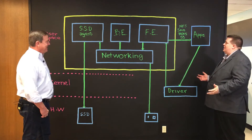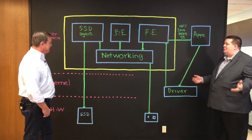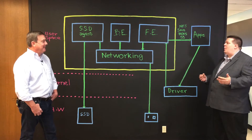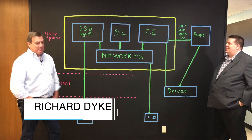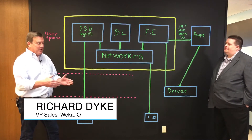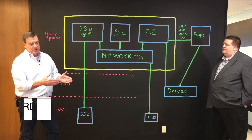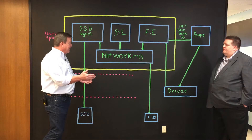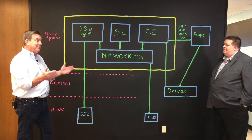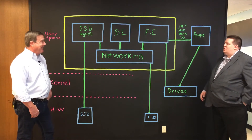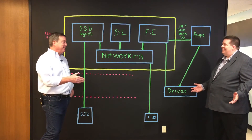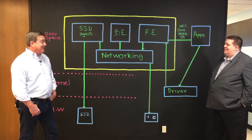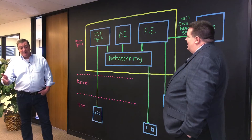We have an interesting drawing on the board behind us. Tell us first of all what Weka means. So Weka is a Greek unit of measurement — as you would have a gigabyte, terabyte, petabyte, it's a Wekabyte, meaning 10 to the power of 30. And it also has something to do with a bird. Yes — the Weka is a flightless bird in New Zealand, and we like to say we're a flightless bird with no competitors.